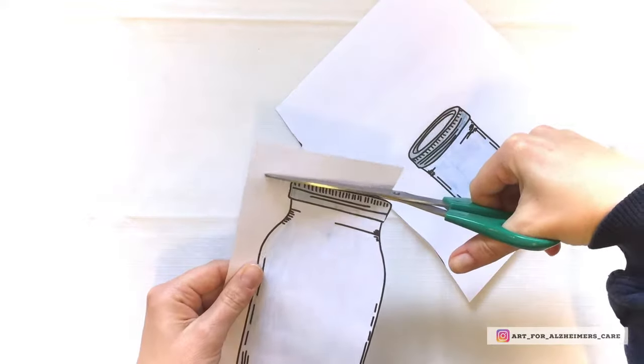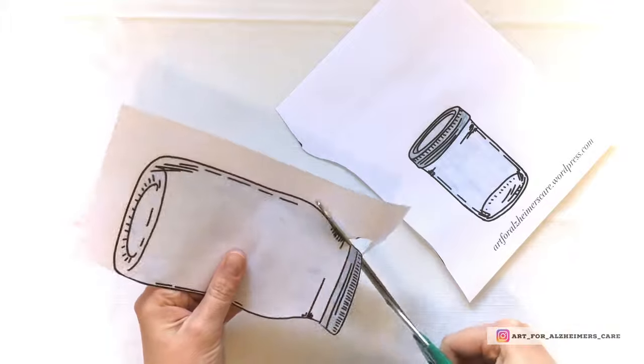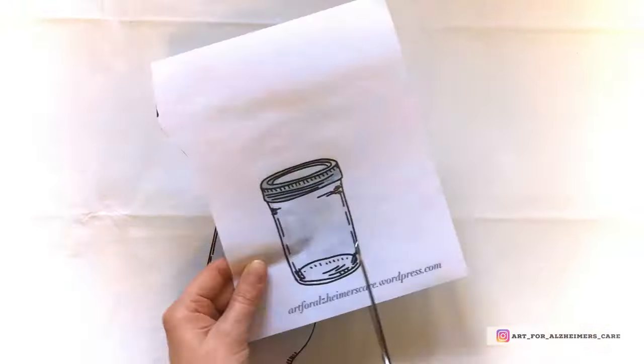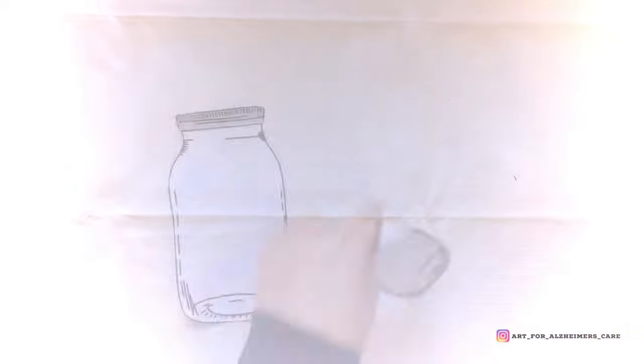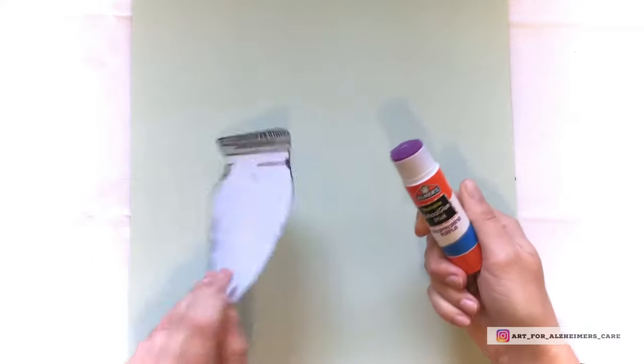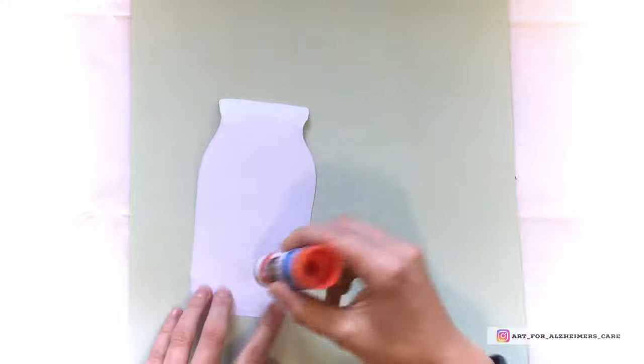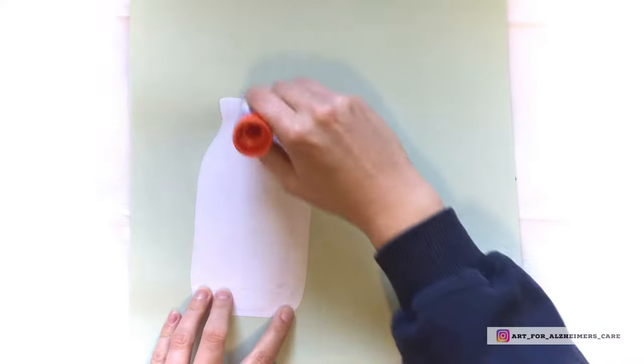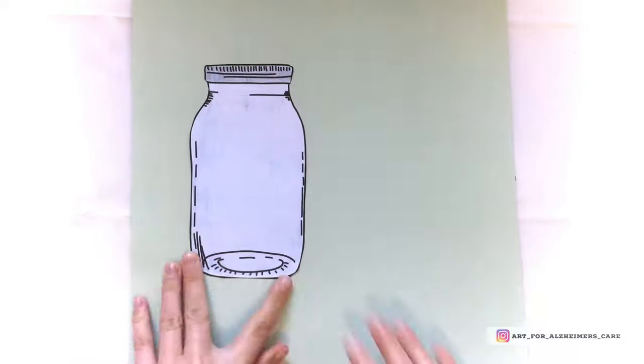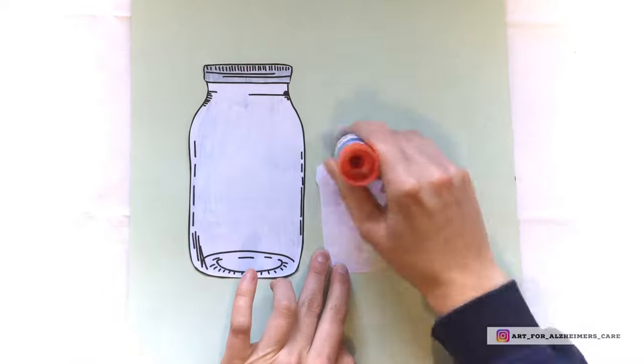Now after you've colored them in, you'll want to cut out each of the jars. After you've cut them out, grab a piece of 12 by 12 cardstock paper, any color of your choice, and then glue the jars onto the paper. So I've used a glue stick here, you can use regular white glue as well for this.